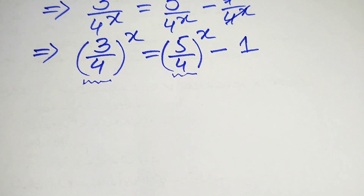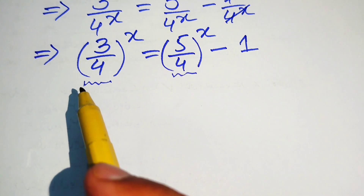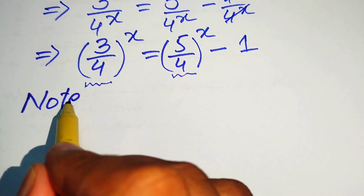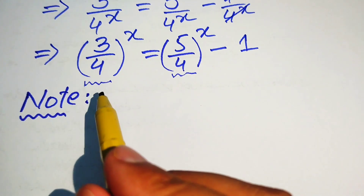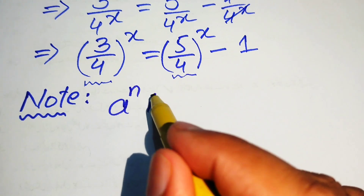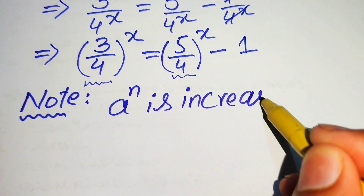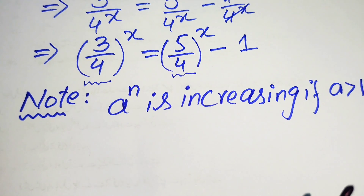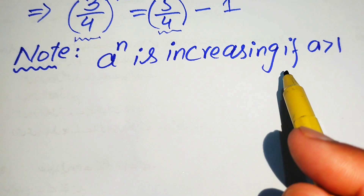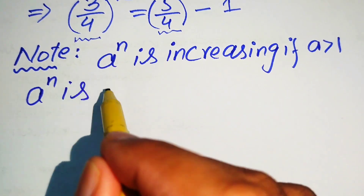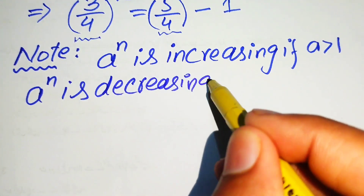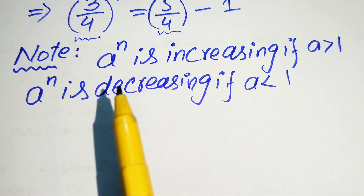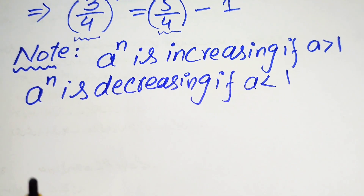Now we focus on these two terms. An important fact about increasing and decreasing functions: a to the power of n is an increasing function if the base a is greater than 1, and it is a decreasing function if the base a is less than 1.